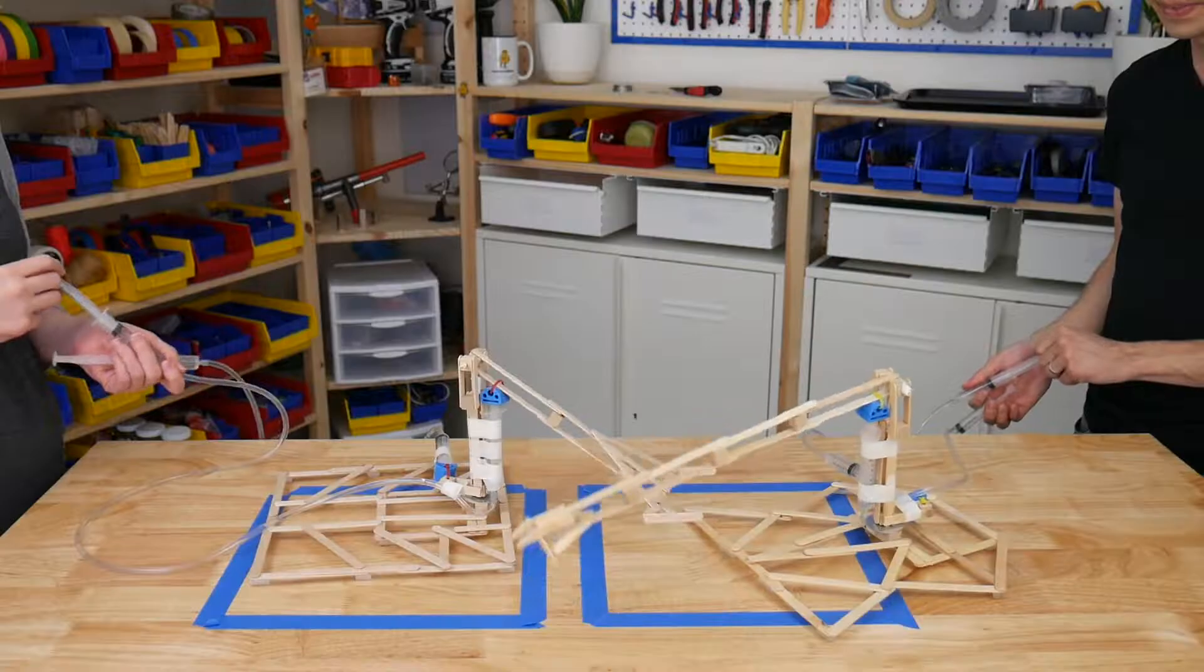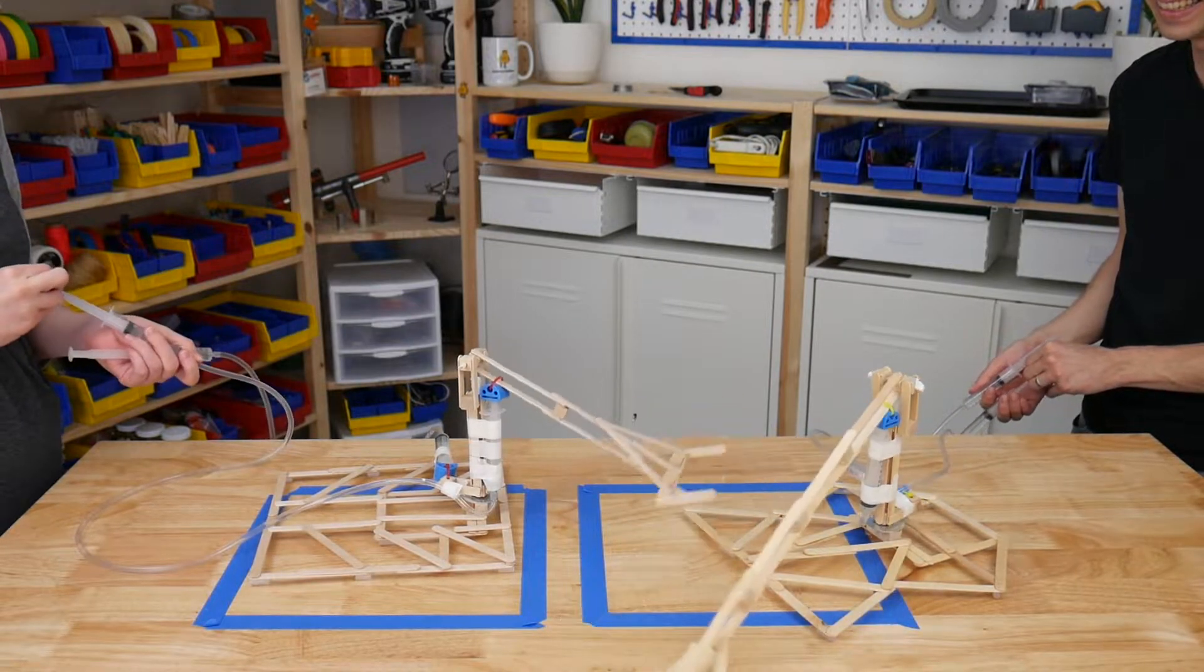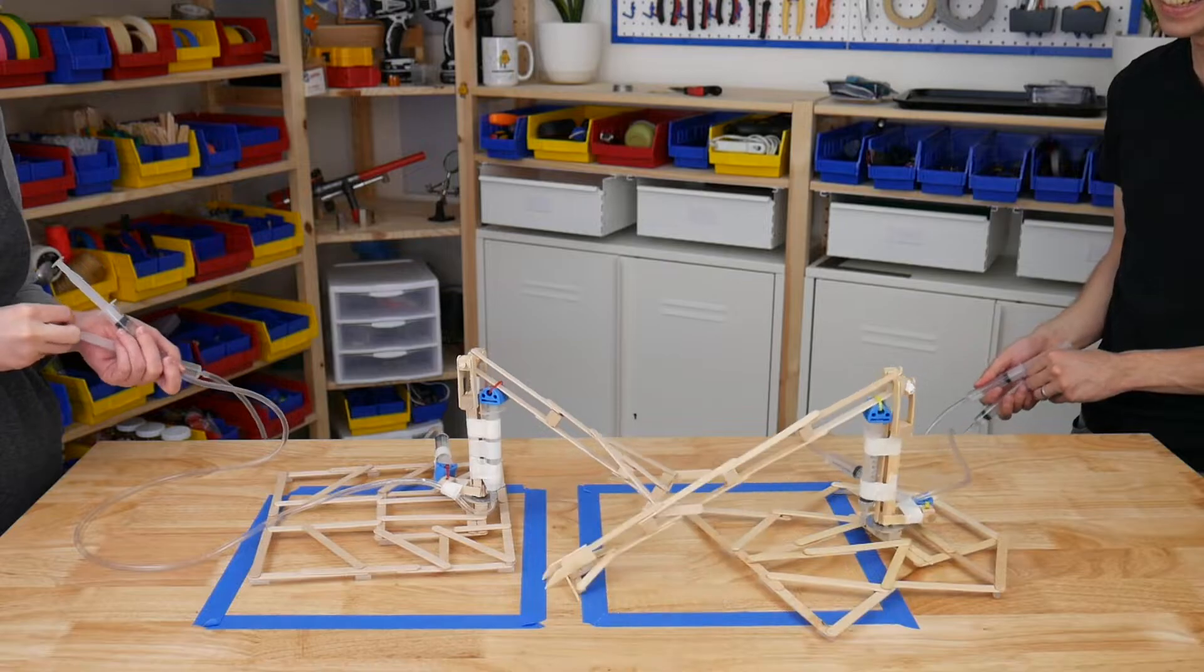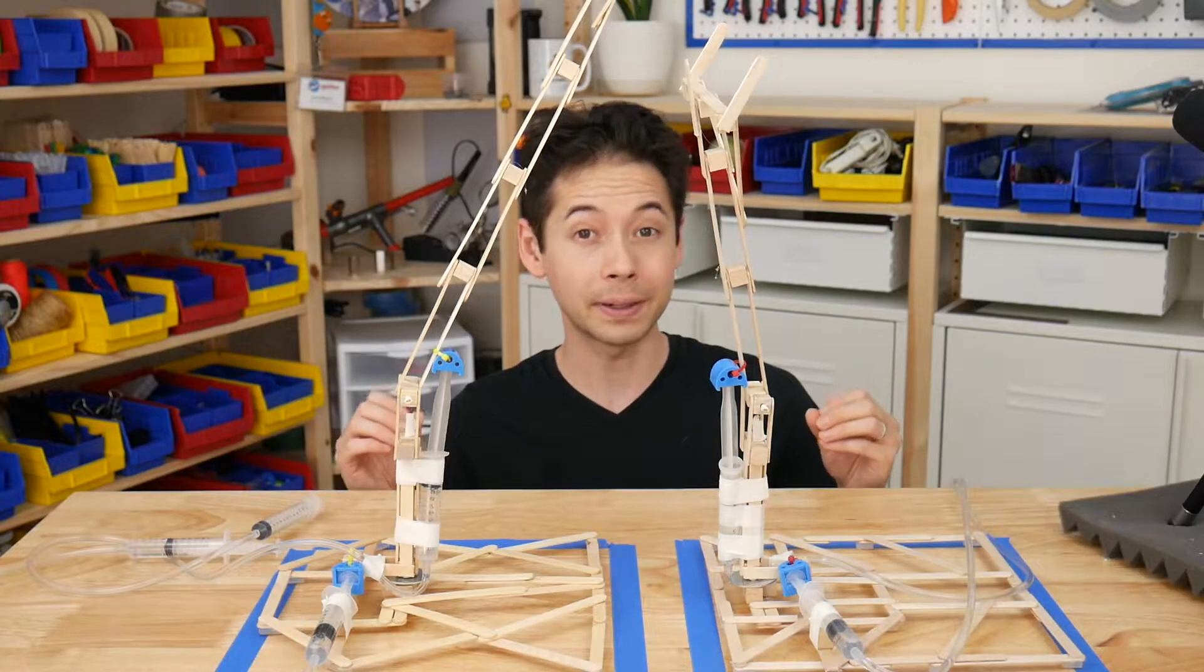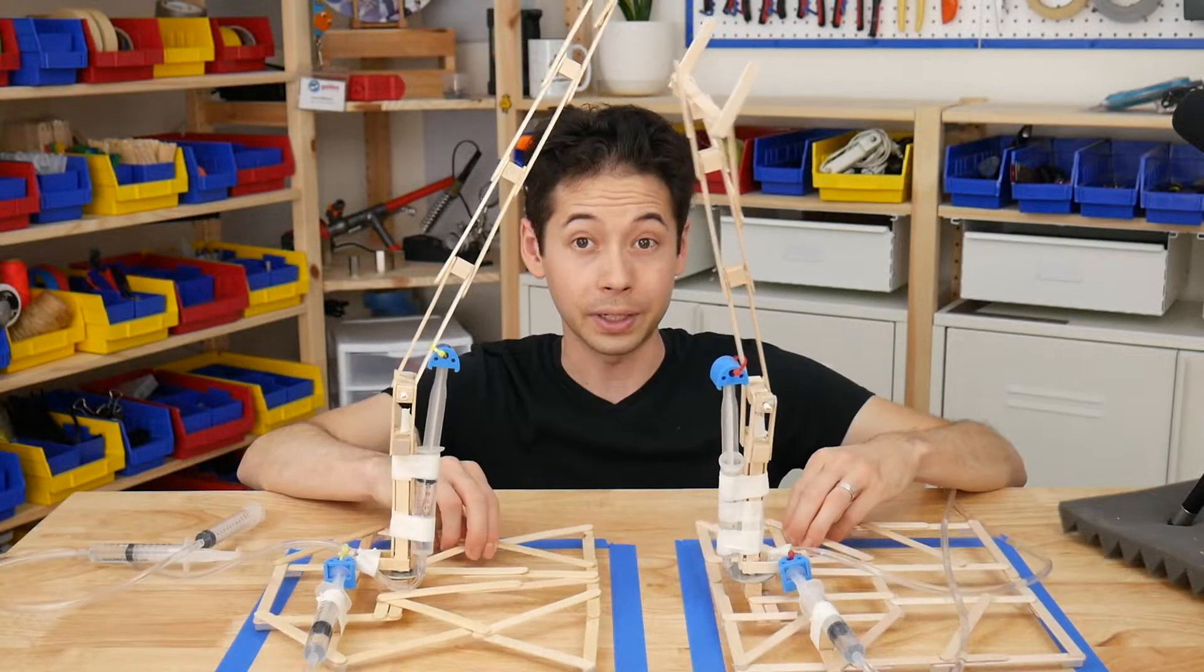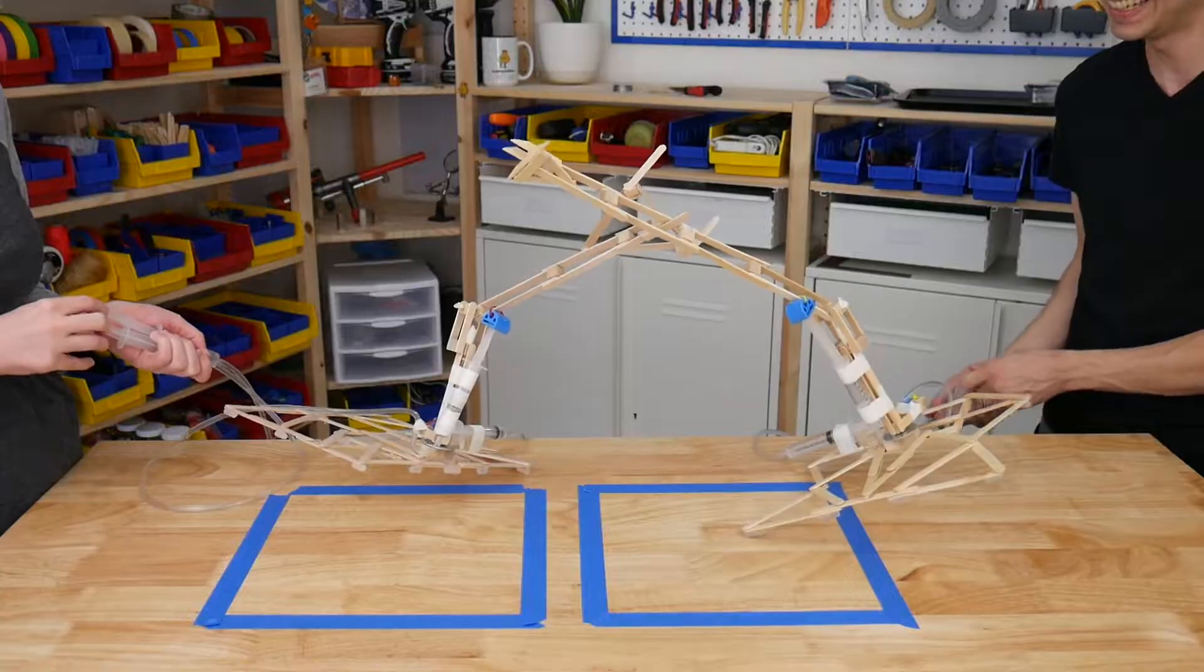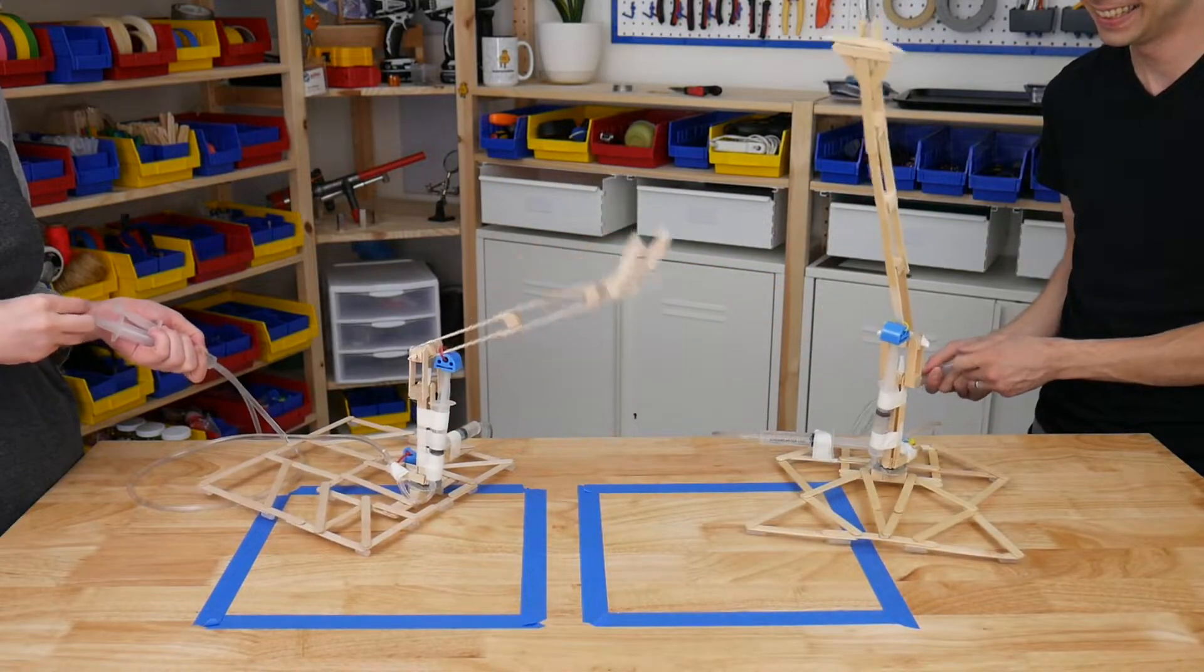If both robots get pushed around to the point where they can't effectively engage each other, then that's a stalemate and you can reset and begin the match again. If both robots experience a losing condition within 3 seconds of each other, then that's a draw. For example, if both robots get pushed out of their opposing squares under the same forceful motion within a couple seconds of each other, that would be a draw.